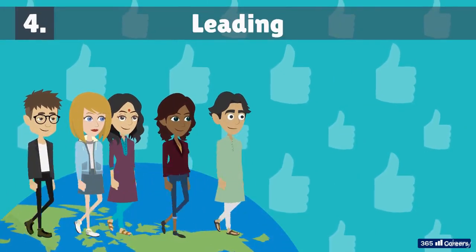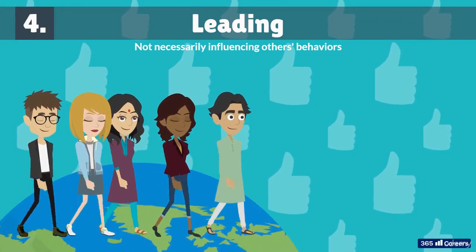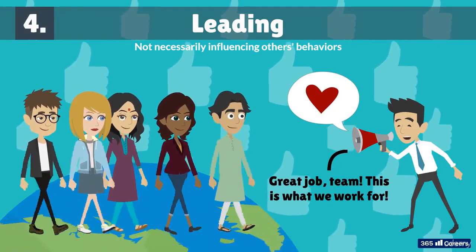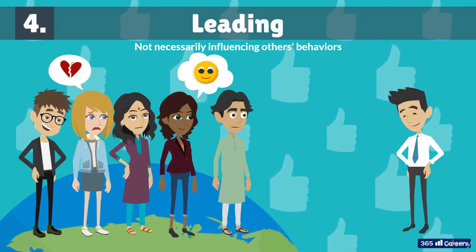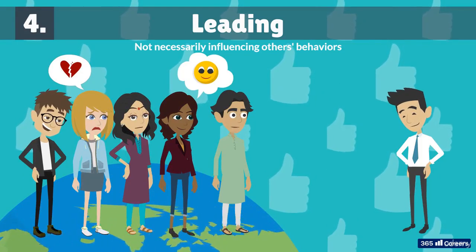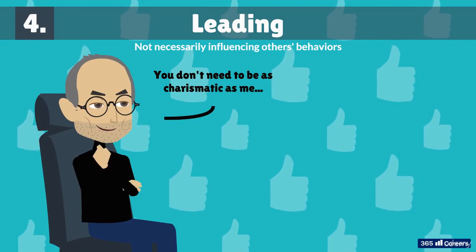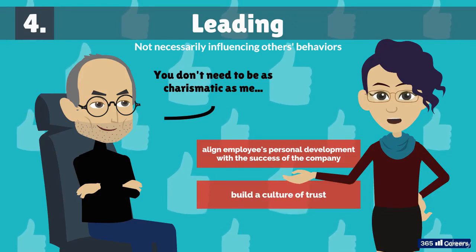The other main function managers have is to lead their teams. Leading a team does not directly translate into influencing others' behaviors, but this plays a role. Often, managers who are good leaders can inspire and motivate team members to attain the firm's goals. Being an effective leader consists of understanding employees' emotions, attitudes, values, and personalities, and building an environment that helps nurture their talent. It is unnecessary to be as charismatic as Steve Jobs to be a successful leader. In my experience, the most important trait of good leaders is to align individuals' personal development with the success of the entire company. They can build a culture of trust in which individuals work together without looking over their shoulder, because they understand the real competition occurs outside the firm, not inside.